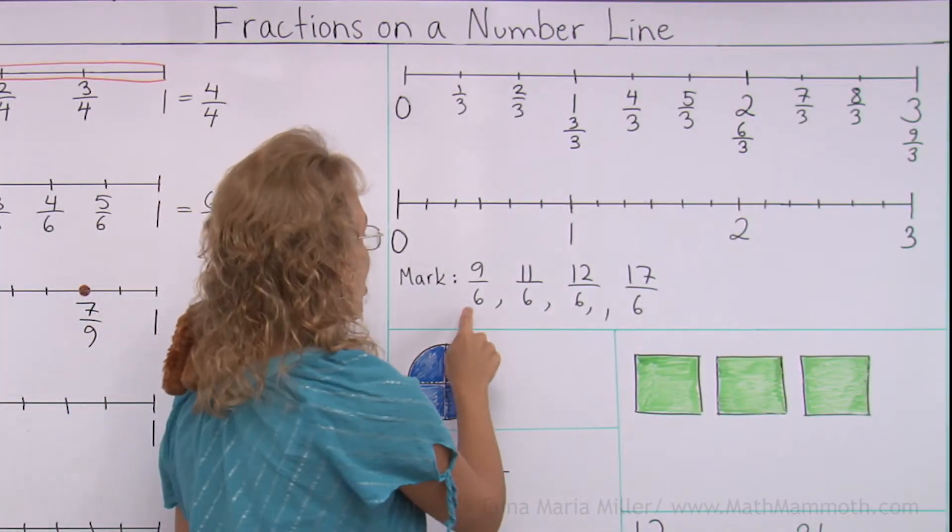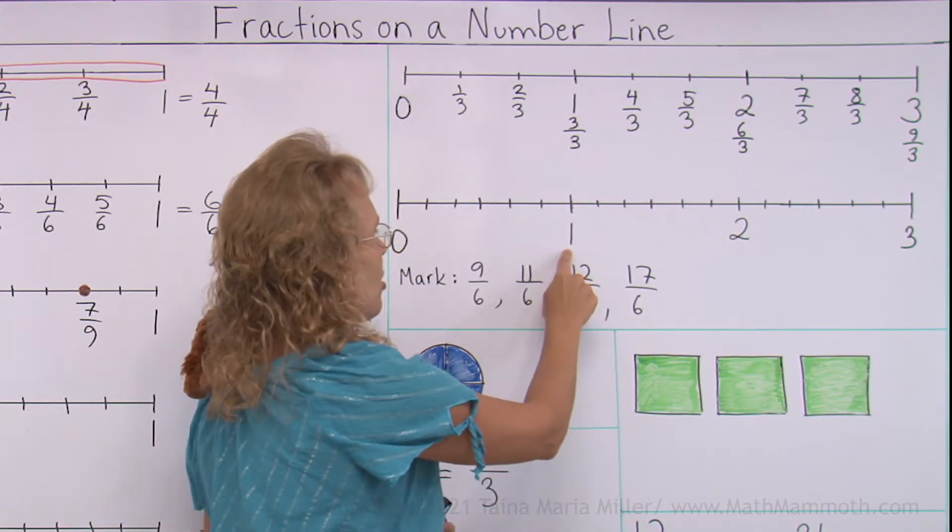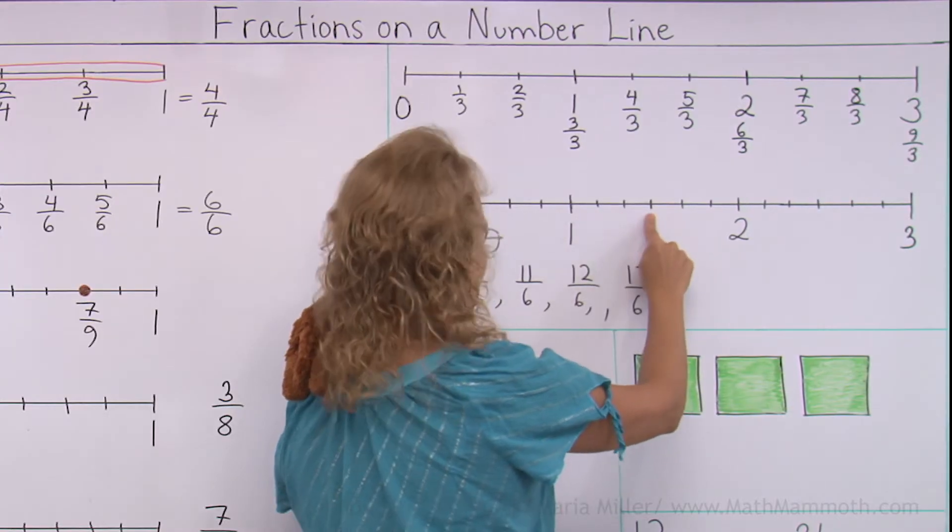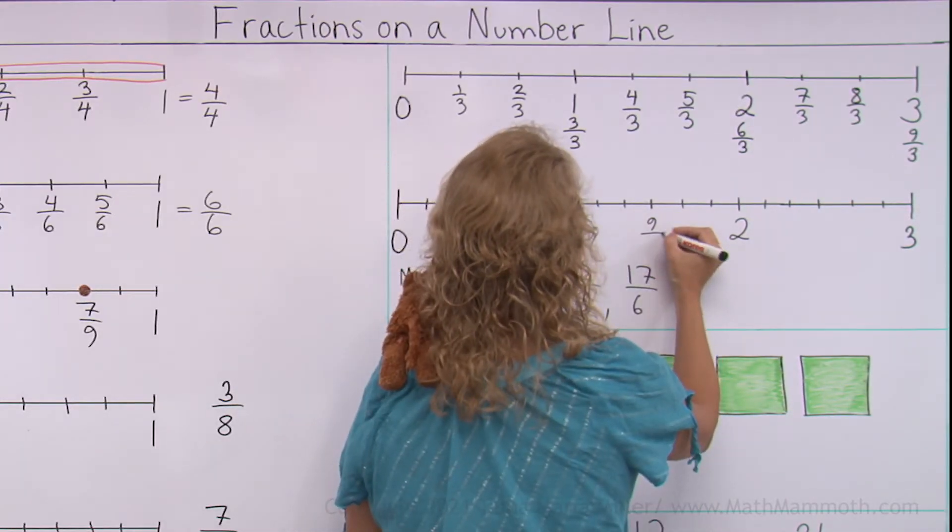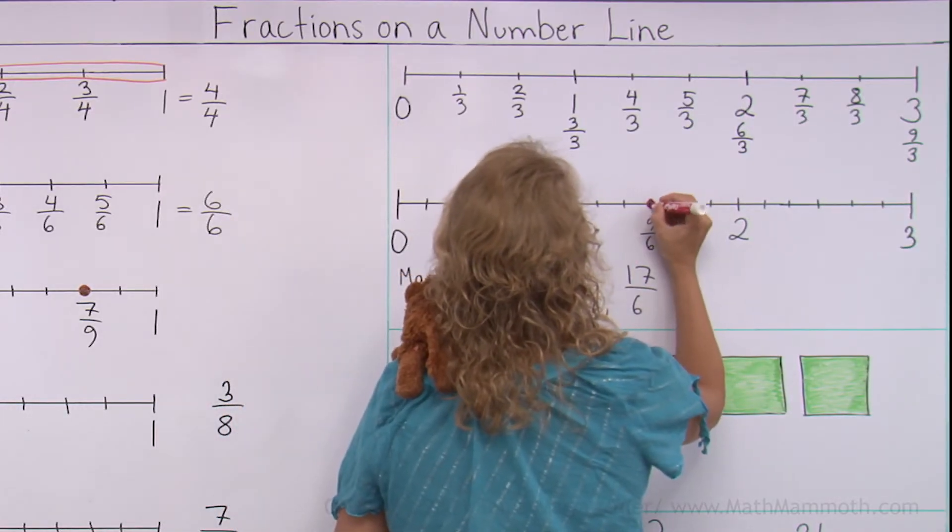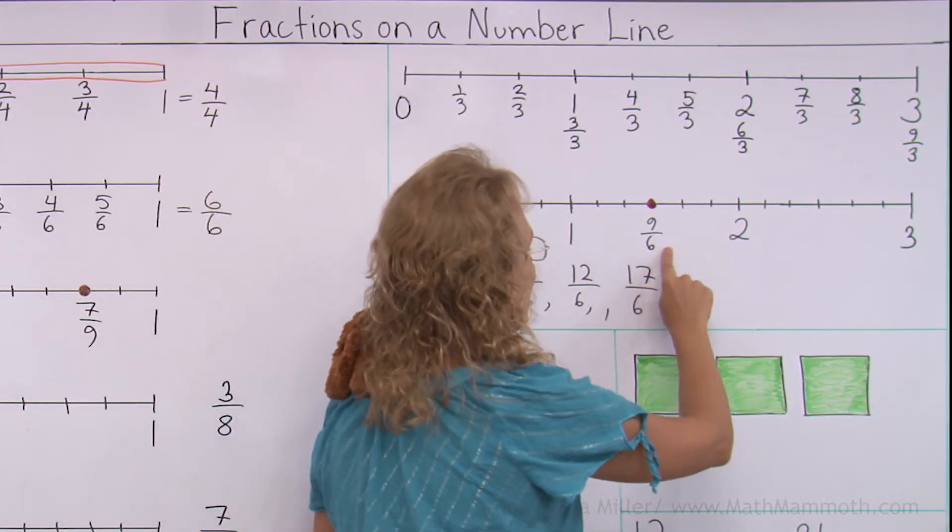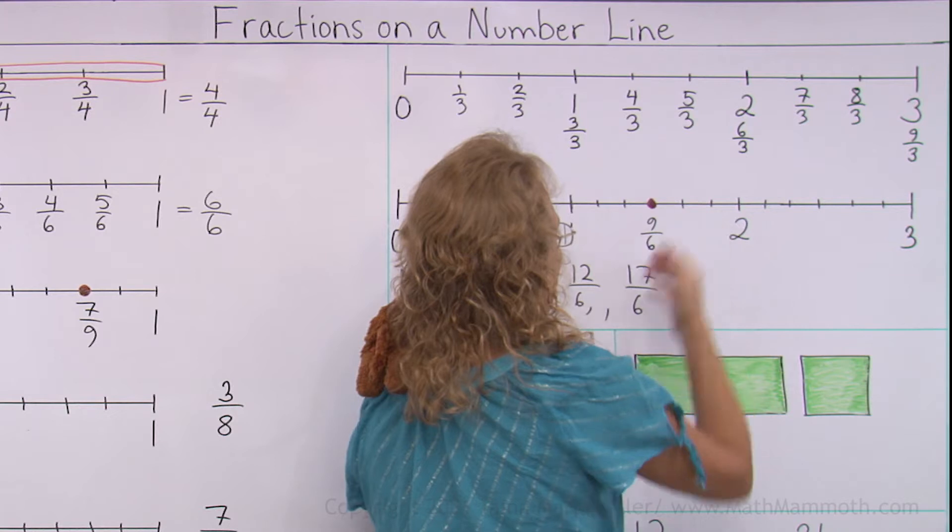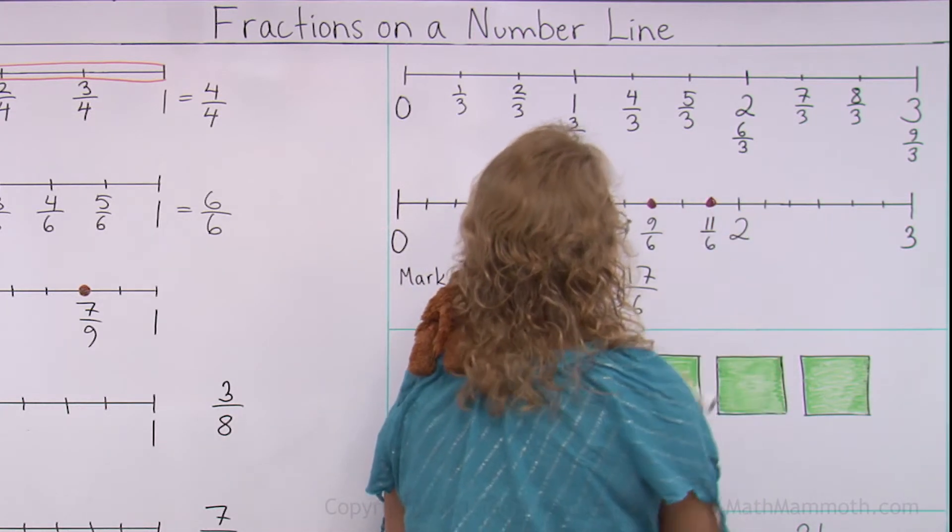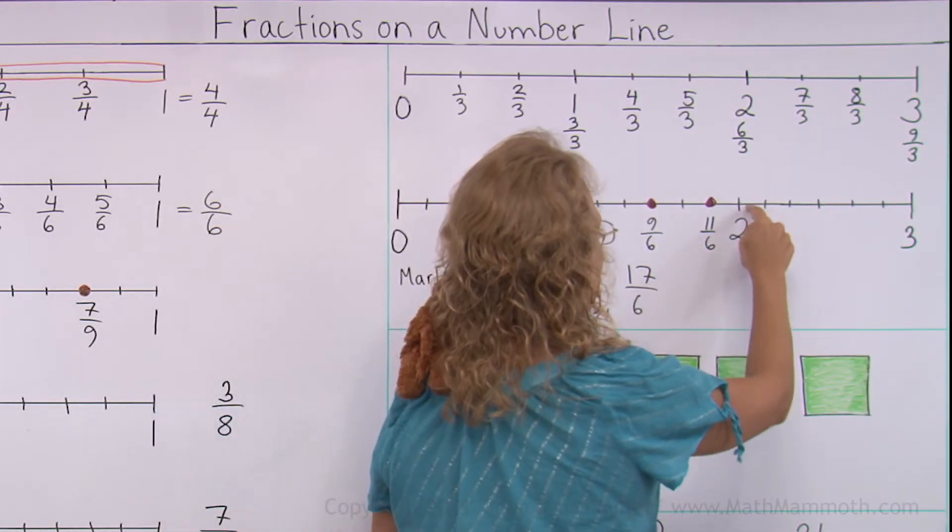Now we are ready to mark the fractions, 9 sixths. Like I said, 1 here is actually 6 sixths. So beyond that, there's 7, 8, and 9, right there, 9 sixths. Let's draw a nice big dot there too. 11 sixths is, of course, 2 sixths beyond this. 1, 2, more, over here.